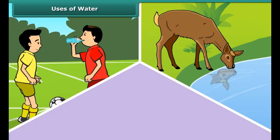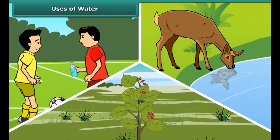Water is an essential part of human, animal and plant life. Living things cannot live without water. It is said that life originated in water and gradually shifted to land, but the connection and importance of water still remains the same. Water is essential for every living organism to grow and flourish.